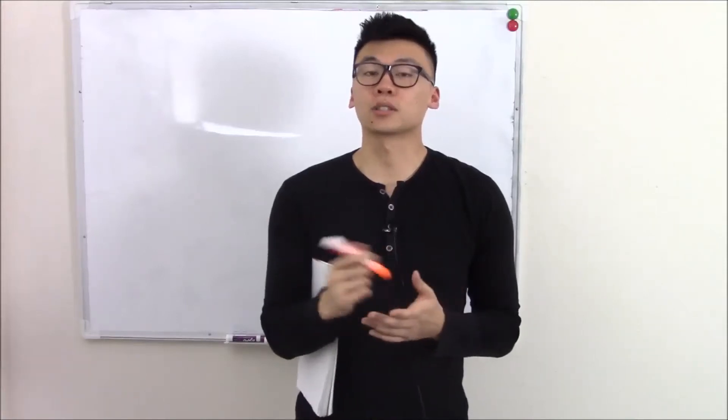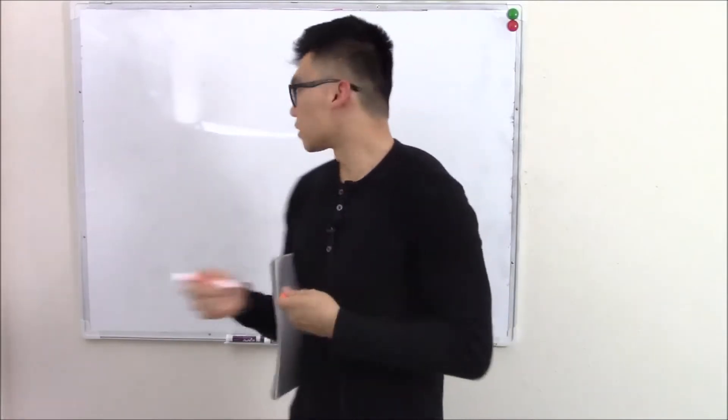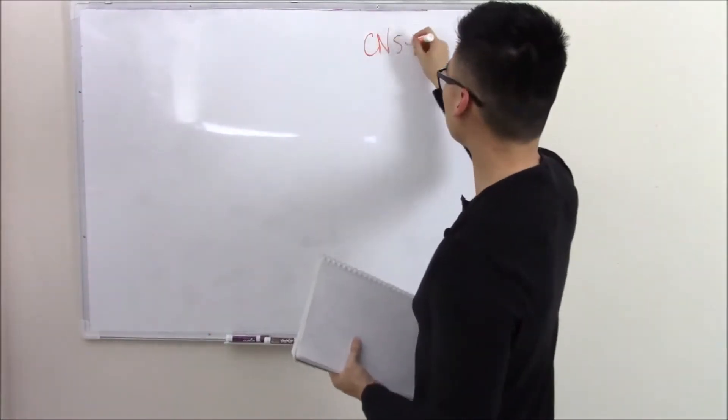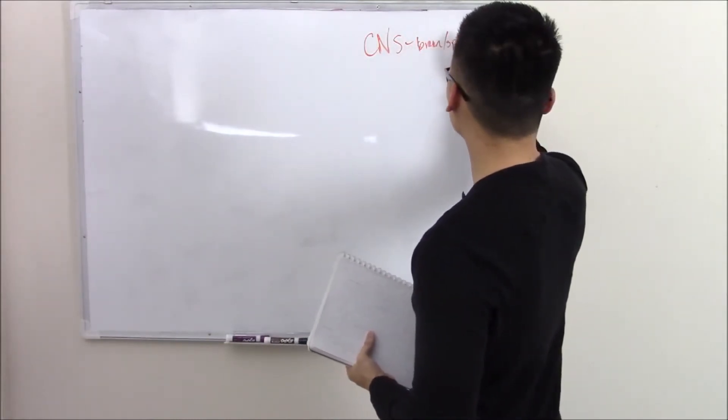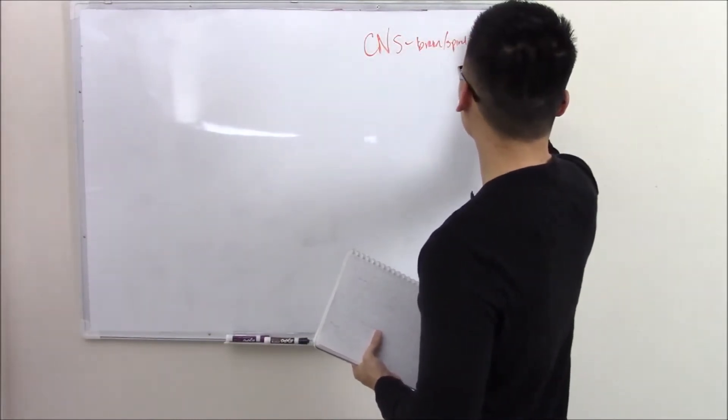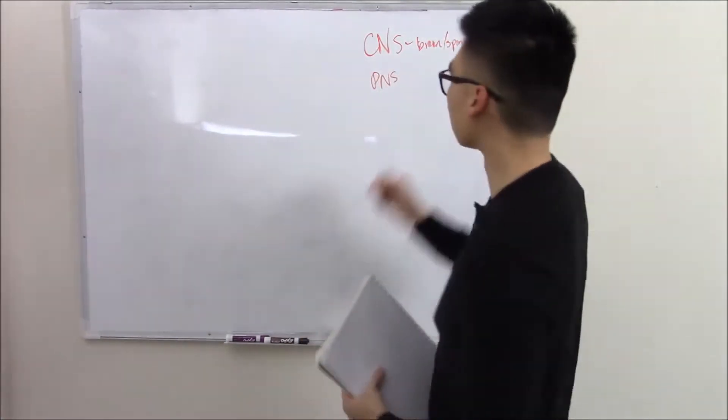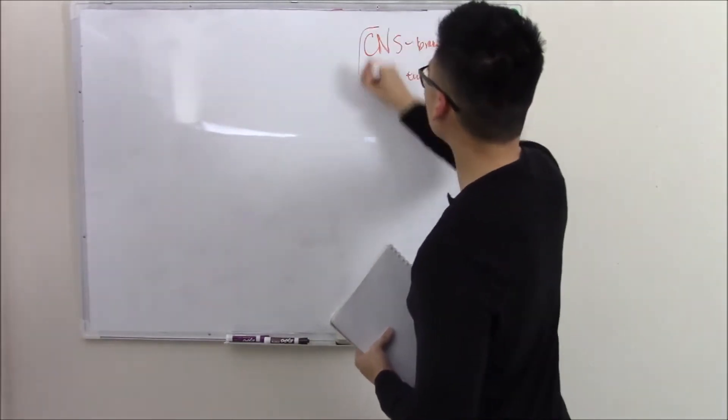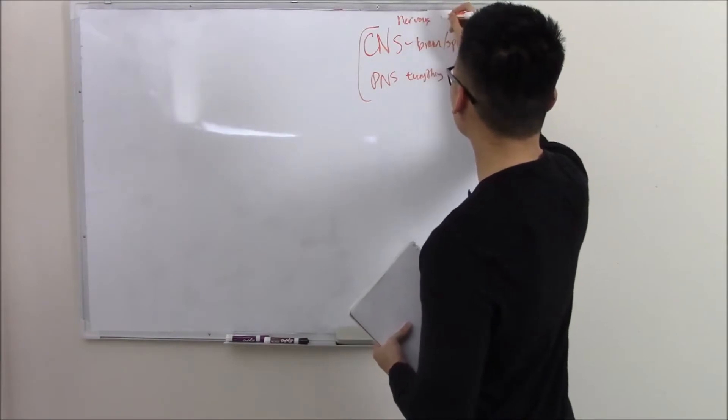This video kicks off our neuroblog and we're going to start by talking about the development of the nervous system. Your nervous system is made up of two things: your central nervous system, which is your brain and your spinal cord, and your peripheral nervous system, which is everything else. All of this makes up your nervous system and that will be the talk of this block.